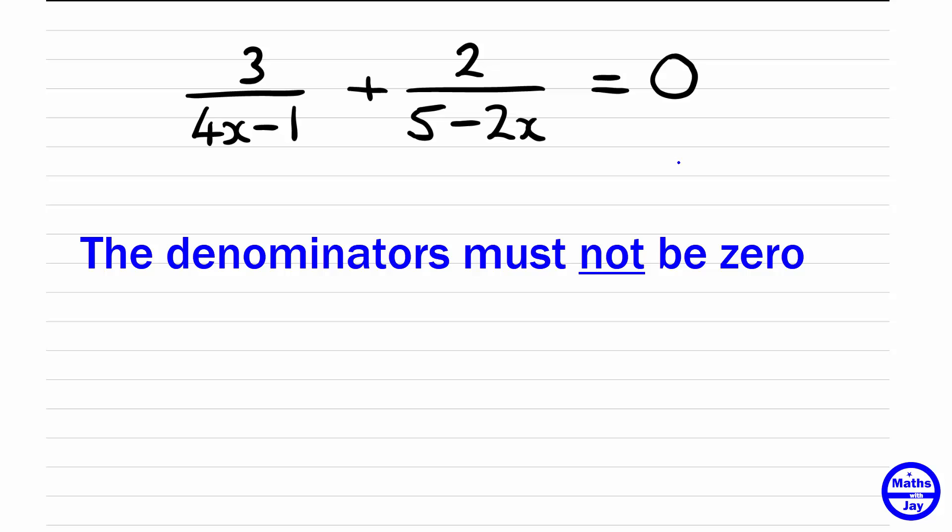4x minus 1 can't be zero, so x can't be equal to a quarter. And 5 minus 2x can't be zero, so x can't be equal to 2 and a half or 5 over 2. That's just in the back of our minds to be aware of.